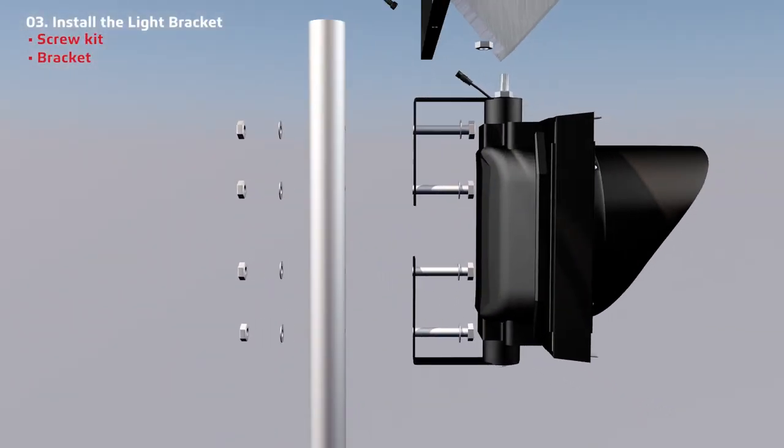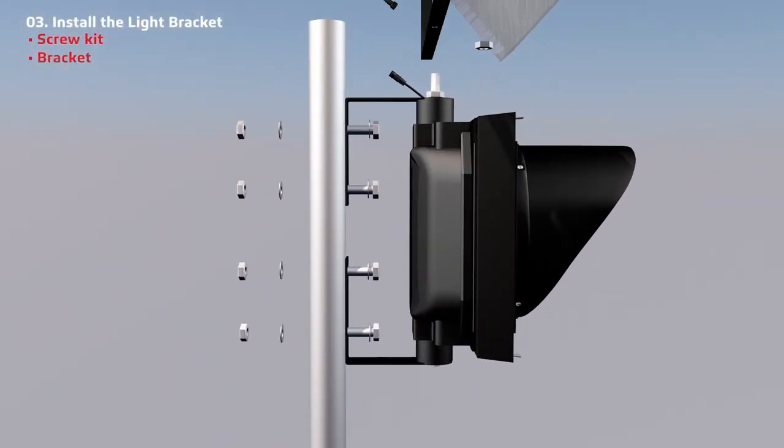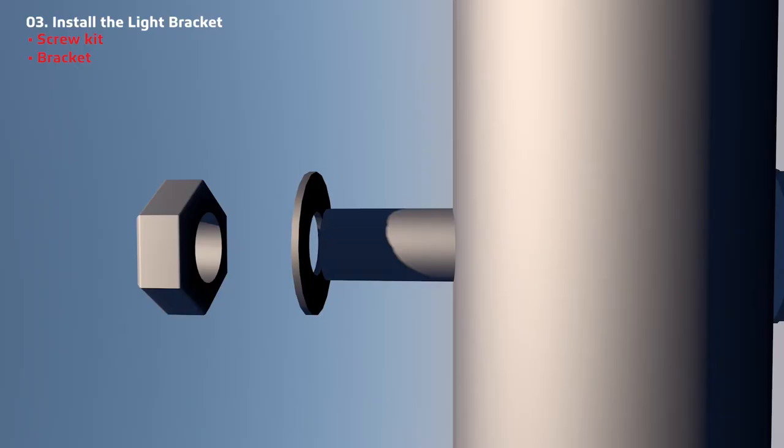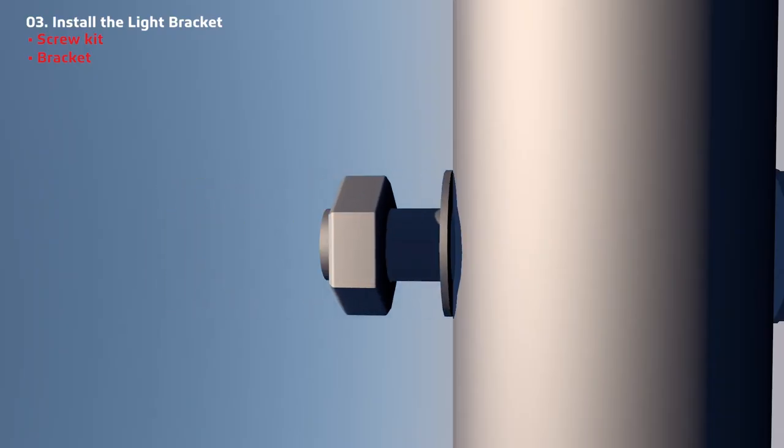Next, install the light by screwing the light bracket to the pole with the screw kit. Please secure screws in this order.